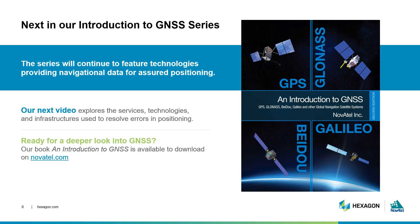That concludes our look into how receivers process satellite signals. Thanks for joining me for episode 3 of our Introduction to GNSS webinar series. In the past three episodes, we have followed a signal as it was broadcast from a satellite, sent through the atmosphere, received by an antenna, and processed by a receiver. Our next episode will describe the ways in which errors are resolved through equipment, algorithms, and other technologies. If you are ready to get a head start in learning these GNSS concepts, you can download our book An Introduction to GNSS on our website. Thank you for joining me.